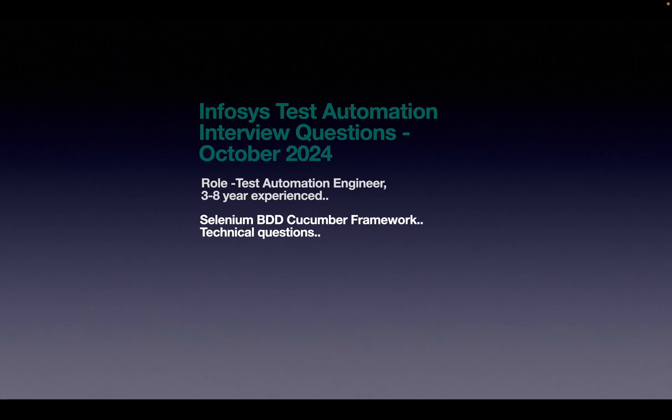Hi friends, welcome to Ajay Automates channel. In this video we are going to quickly see about the test automation interview questions asked in Infosys in the month of October 2024, that is this current month. This interview is for a Selenium and BDD Cucumber Framework role and the candidate should have 3 to 8 years experience.